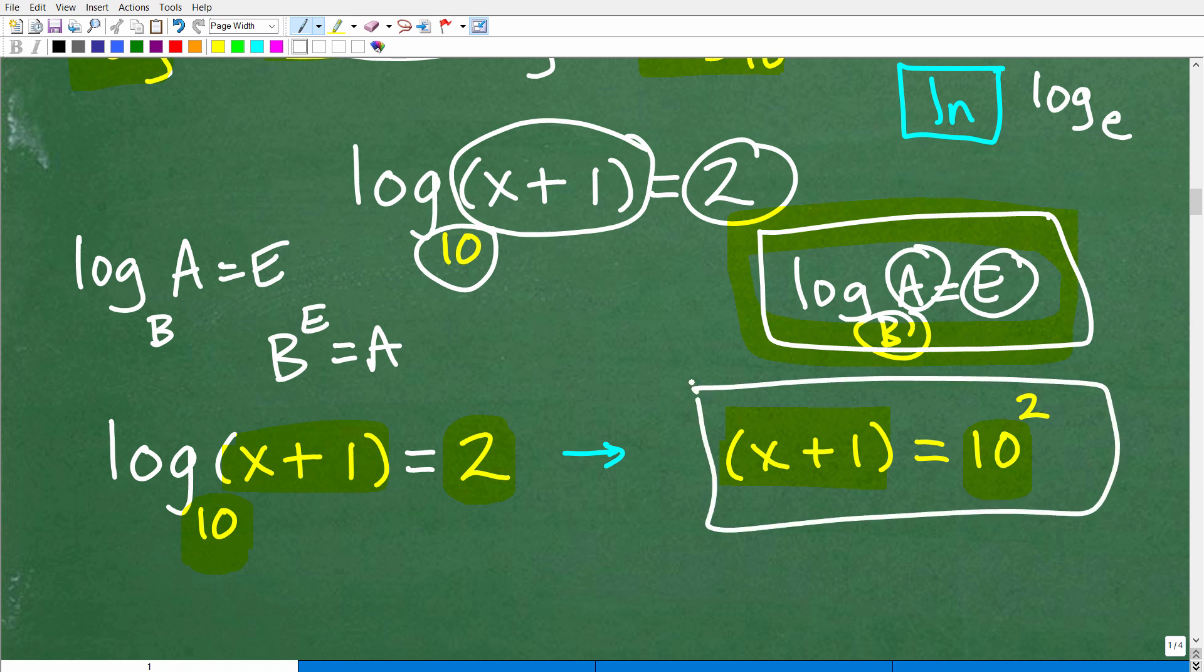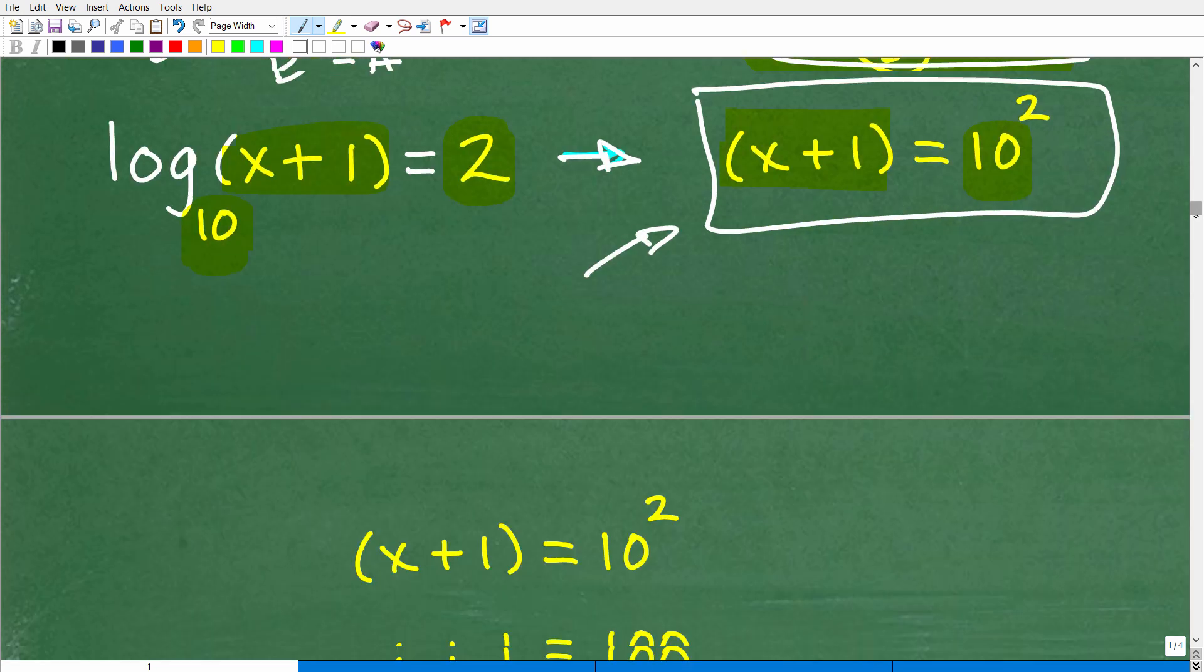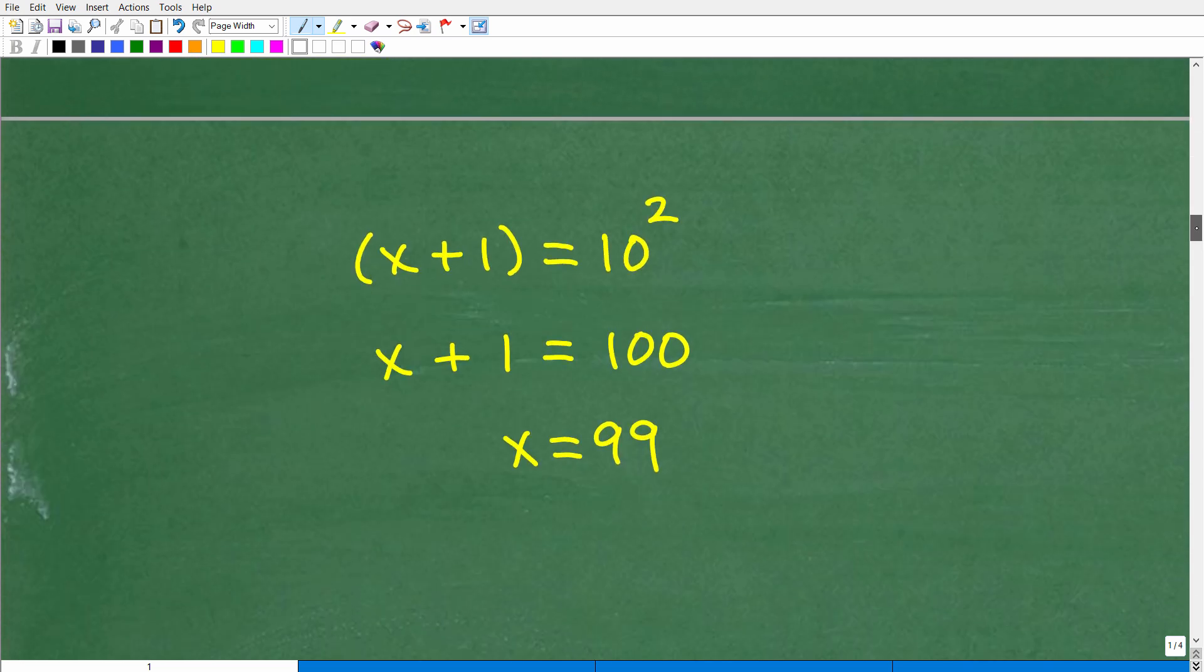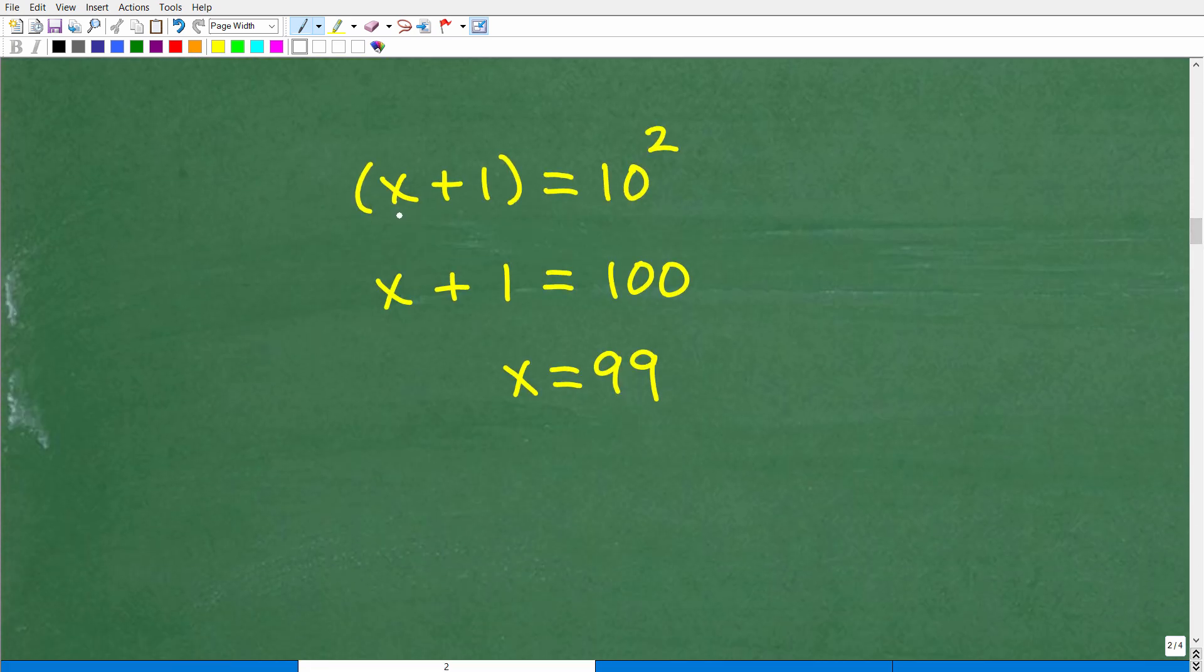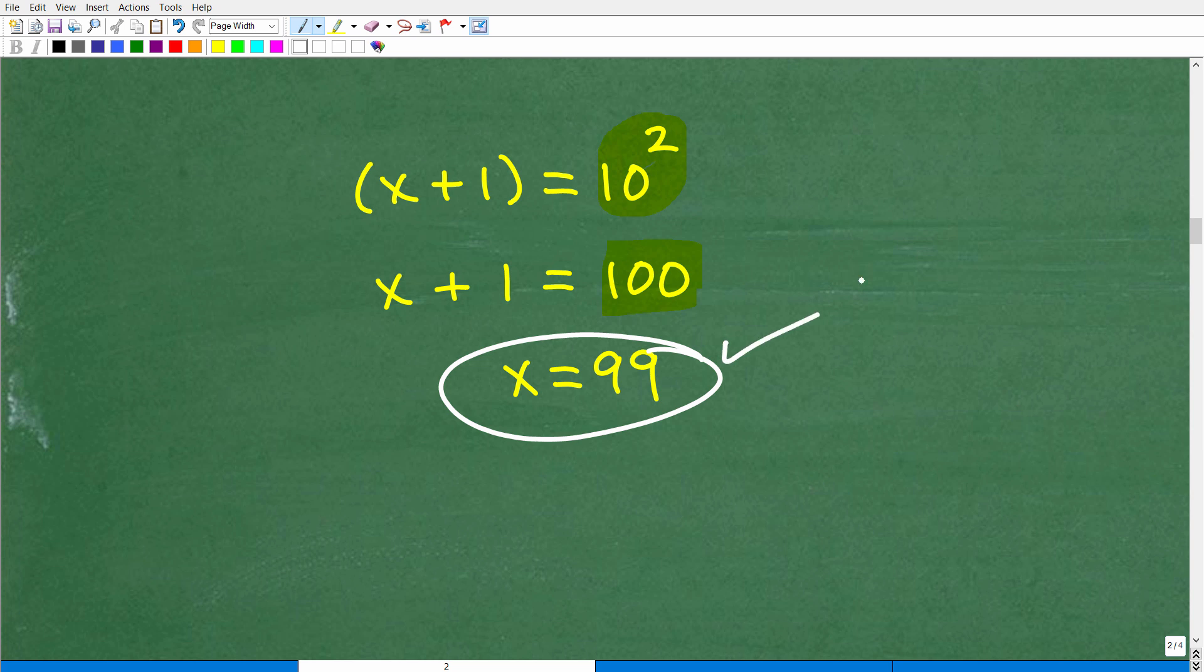All right. So now what we've done, again, we're faced with a logarithmic equation. We're going to write this in terms of an exponential equation and solve this. And when we solve this, we're going to get the answer. So here we have x plus 1 is equal to 10 to the second power. 10 to the second power is 10 times 10. That's 100. So x plus 1 is equal to 100. All we need to do is subtract 1 from both sides of the equation. And there is your lovely answer. X is equal to 99.